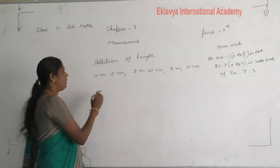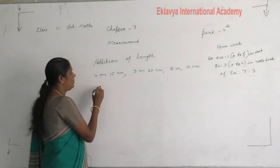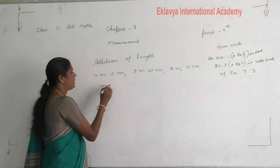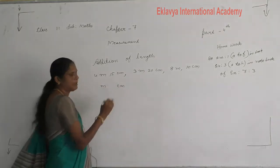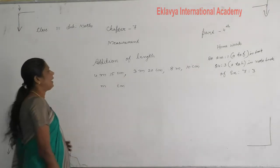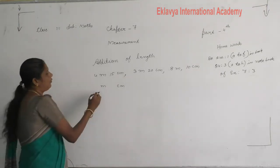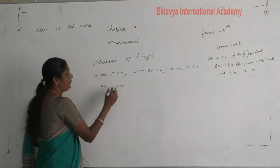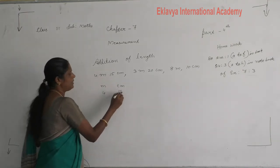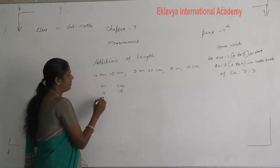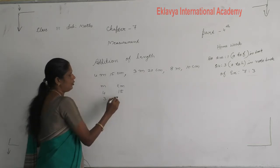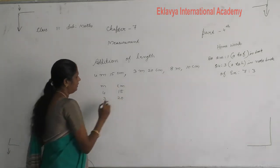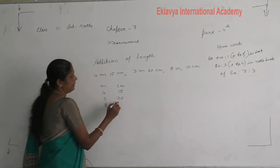First we make 2 columns. Write 4 meter 15 centimeter, then 3 meter 20 centimeter, then 8 meter 10 centimeter. Then we add these numbers.